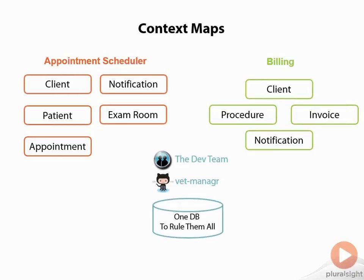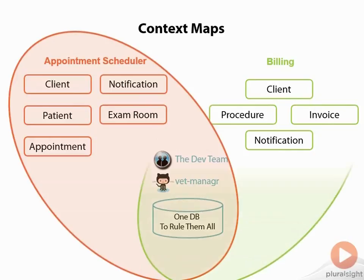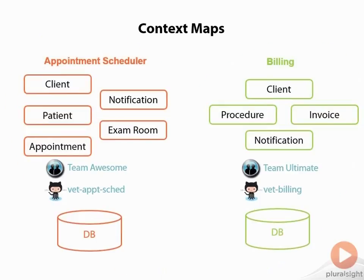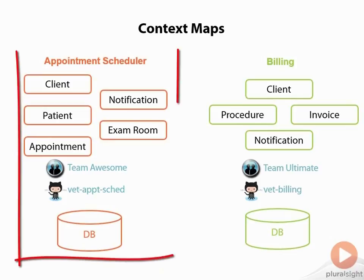Part of creating a context map involves explicitly identifying its boundaries. If we try to draw the boundaries around these two bounded contexts, we can see there are now several resources that belong to each bounded context. This isn't ideal if the two contexts really are meant to be kept separate. In the ideal case for a large, complex system, we would have bounded contexts with their own teams, codebases, and database.